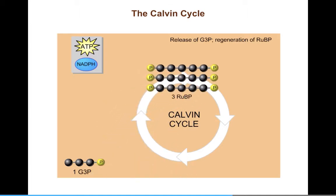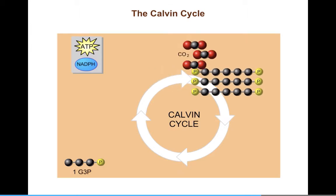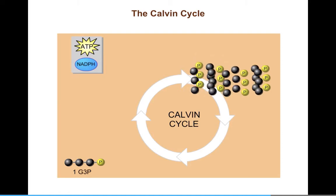To summarize, so far, the Calvin Cycle has used the energy from the light reactions to reduce three carbon dioxide molecules and produce one molecule of G3P. Three more carbon dioxide molecules are fixed to form G3P in this same complicated way.